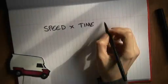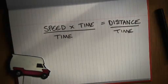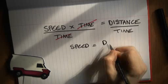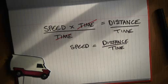You can also rearrange the same equation to find out your speed. So if you divide both sides of the equation by time, you get speed equals distance divided by time. Now this means that your average speed is the distance you've travelled divided by the time it took.